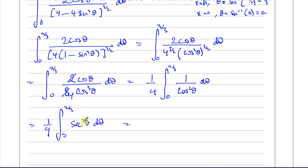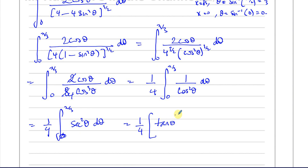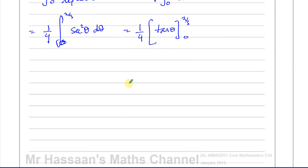I know how to integrate sec²θ — that's one of our standard results, and it's in the formula book. The derivative of tanθ is sec²θ, so integrating sec²θ gives tanθ. Now I start integrating: leaving the integral sign and putting square brackets with the limits, this becomes (1/4)[tanθ] from 0 to π/3.